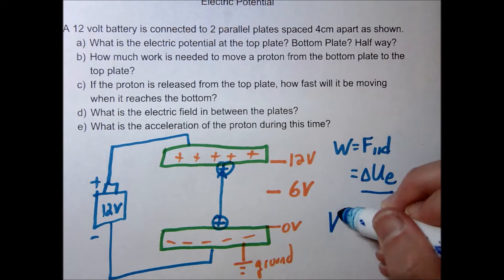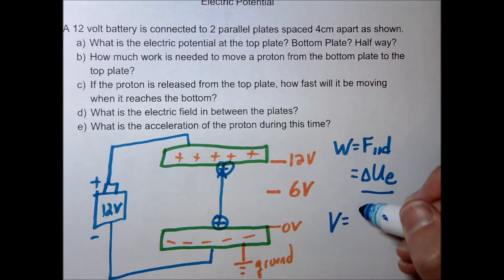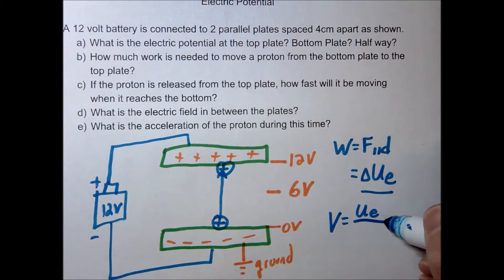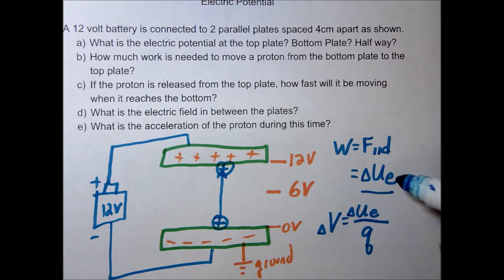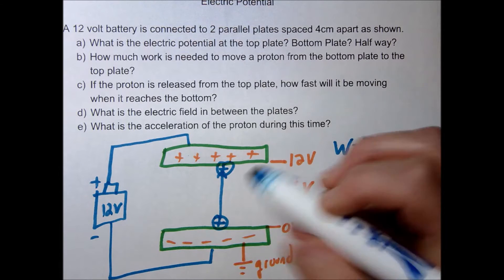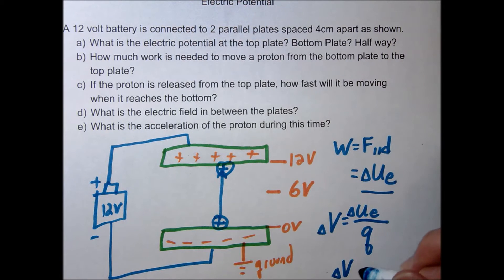Remember voltage or electric potential is defined as the electric potential energy divided by the charge. Or the change in voltage or potential difference is equal to the change in potential over charge. So if we want to find the work, we're just going to need to find this change in potential, which is simply the difference in this potential times the charge.